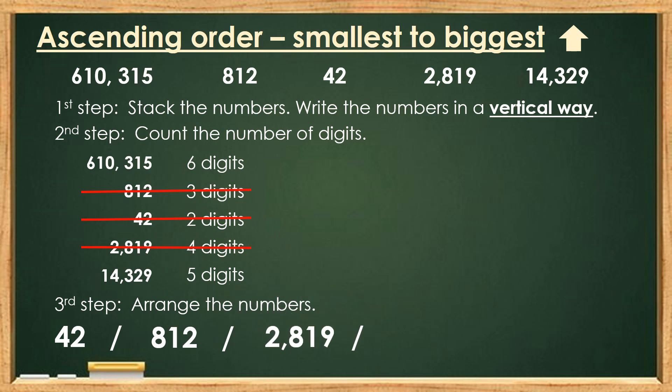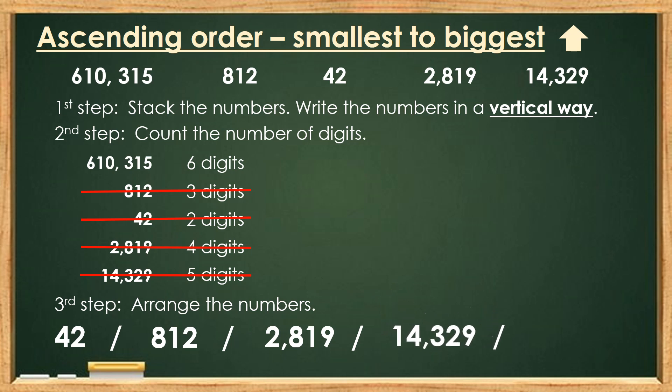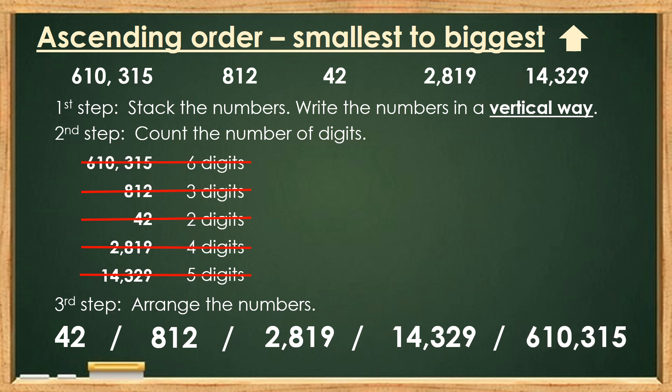14,329 only has 5 digits, so it should be the next one. And the biggest number with 6 digits is 610,315. Now the numbers are arranged in ascending order.